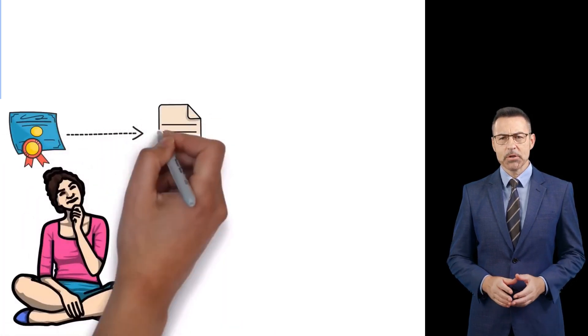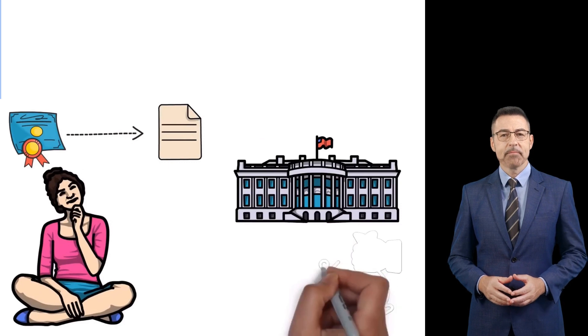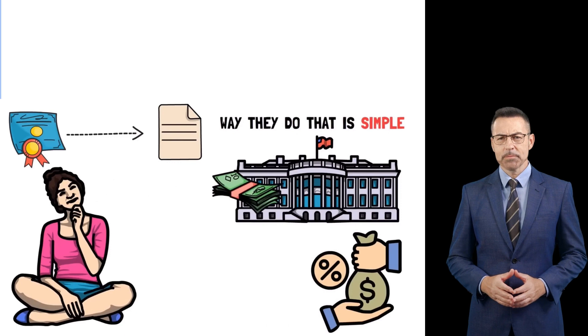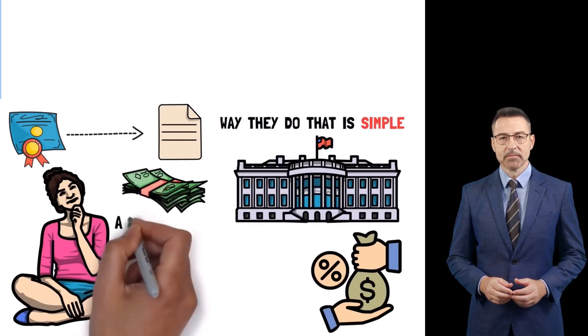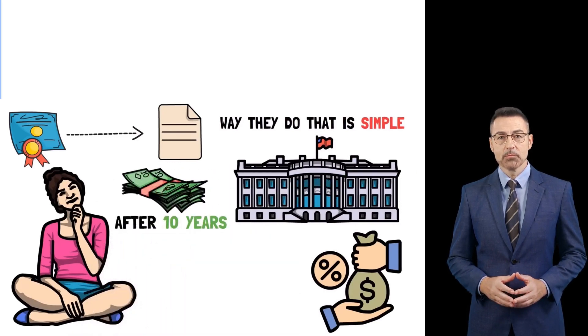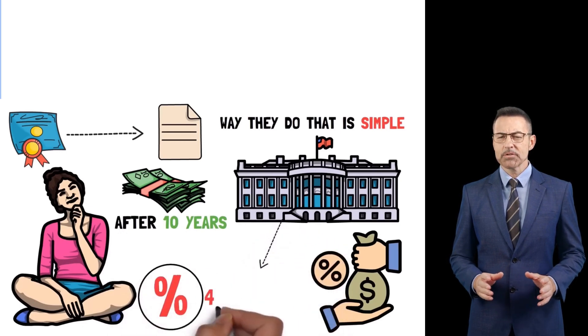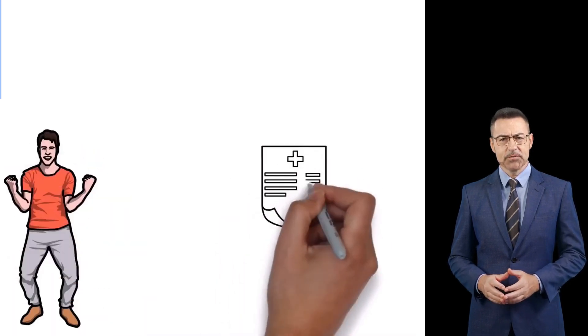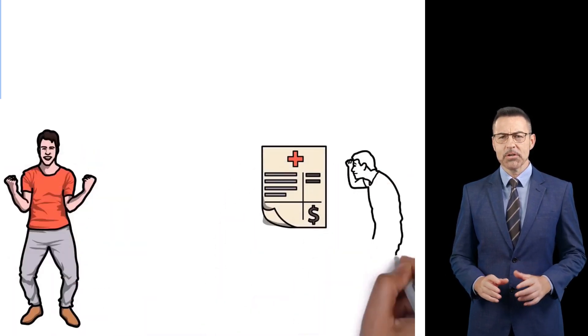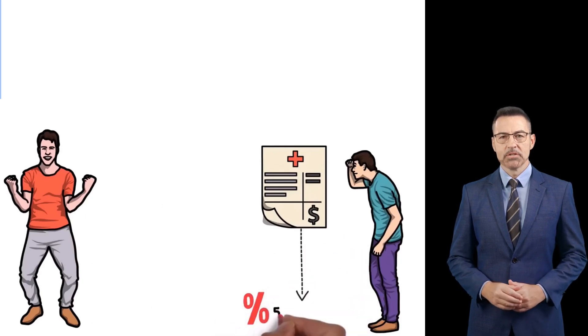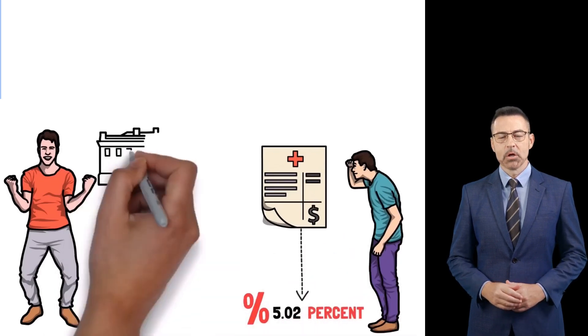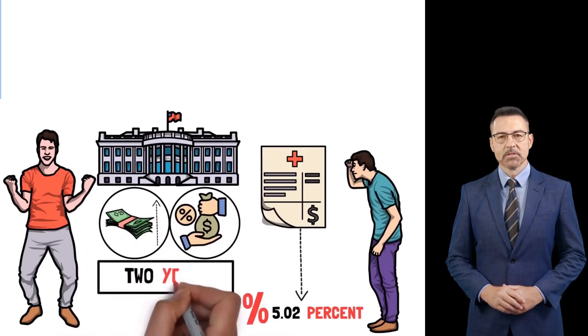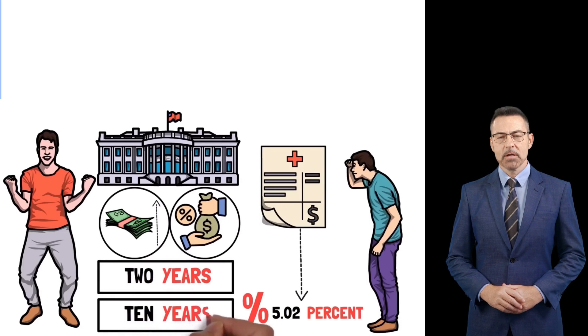Imagine a 10-year treasury note, like a special kind of paper that the government uses to borrow money. And the way they do that is pretty simple. They take your cash with a promise that they'll give you the money back with a little bit of interest after 10 years. Currently, the interest rate they're paying is 4.5%. Now here is where it gets interesting. There is also a two-year treasury note. And if you look at that one, the interest rate they're paying is 5.02%, which means that the government is paying you a higher interest rate to borrow your money for two years instead of 10 years.